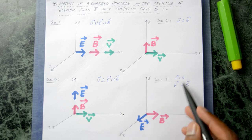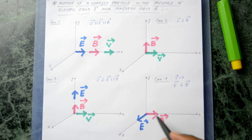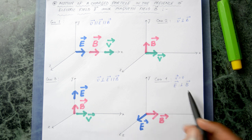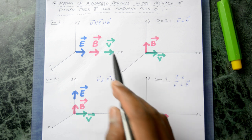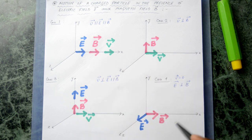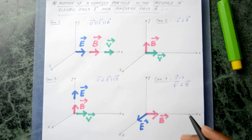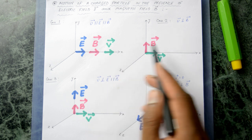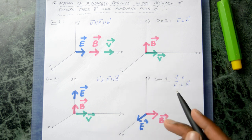Lastly, we have a particle which is at rest in the presence of a crossed electric and magnetic field, where B and E are perpendicular to each other. The nature of the motion in all four different cases are going to be different, and I'm going to obtain the trajectory in all four cases starting from first principles. I will provide timestamps for those particular cases.